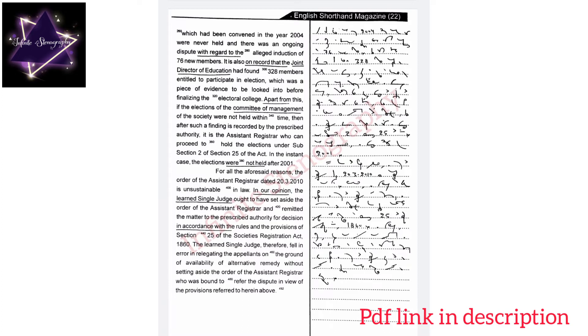was a piece of evidence to be looked into before finalizing the electoral college. Apart from this, if the elections of the committee of management of the society were not held within time, then after such a finding is recorded by the prescribed authority, it is the assistant registrar who can proceed to